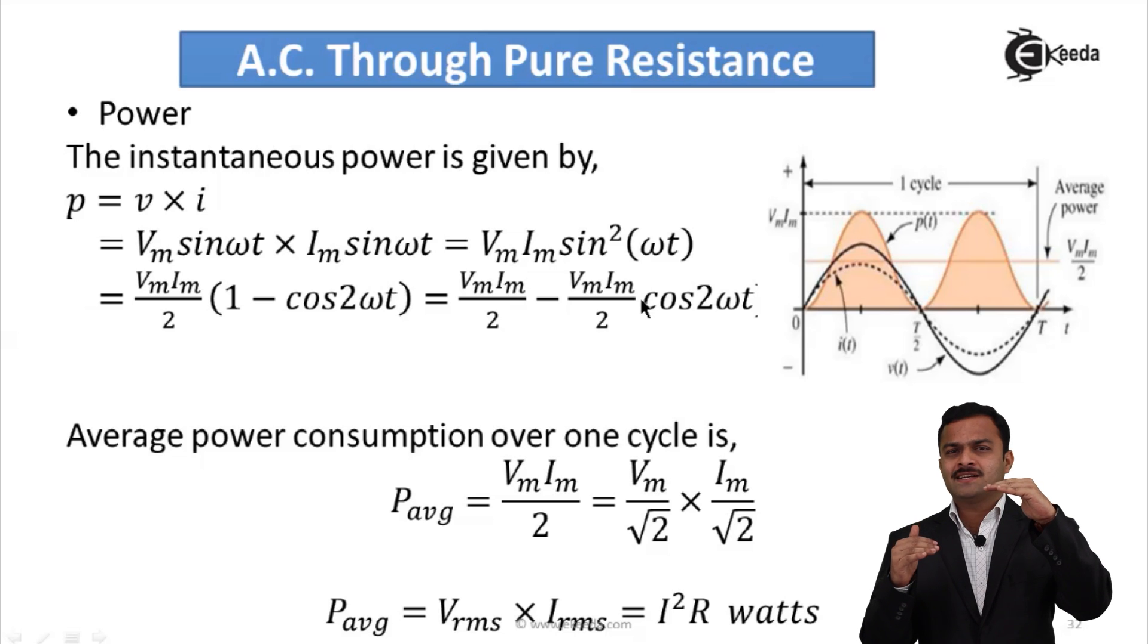Why? Because the average for any sinusoidal quantity over one complete cycle is always zero, as it has positive and negative half cycles. Whatever positive values will be having, same negative values are also present at the same time. So if I take the average it will become zero. This term vanishes, so average power will become VmIm/2. Now this 2 I am splitting like this: √2 × √2.